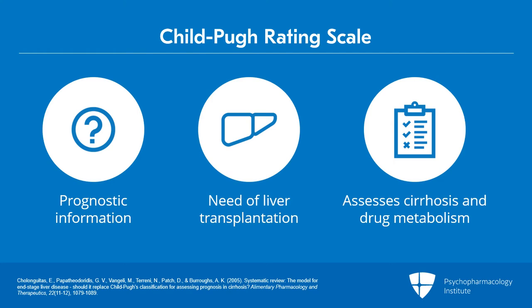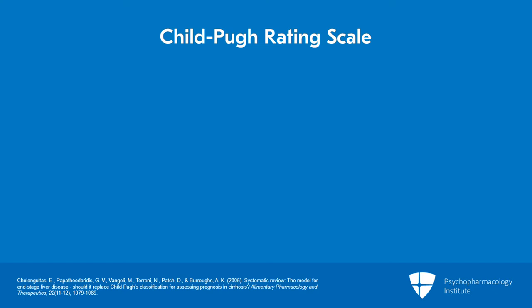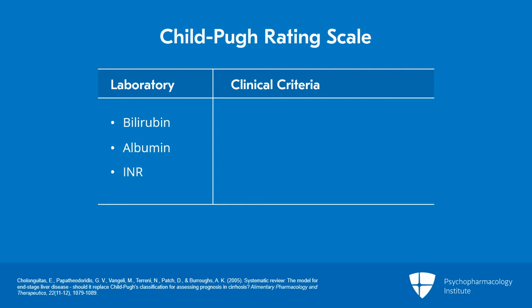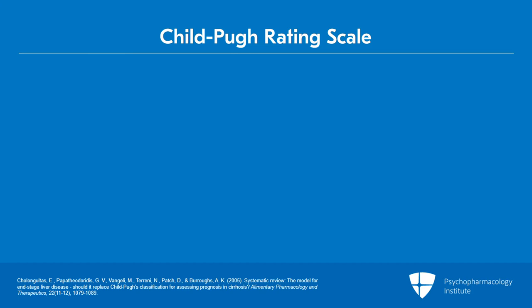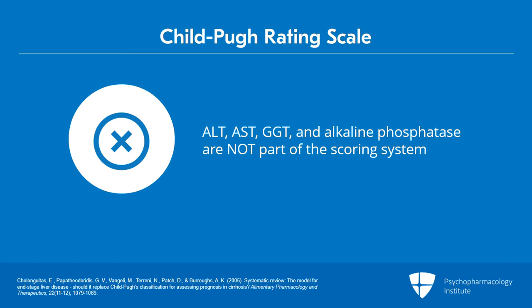Here are the elements of the Child-Pugh rating scale. There are three labs: bilirubin, albumin, and INR. INR is the International Normalized Ratio, which looks at your PT compared to standardized norms and converts it to a ratio. There are also two clinical criteria: ascites and hepatic encephalopathy. It's important to notice that ALT, AST, GGT, and alkaline phosphatase are not part of the scoring system.